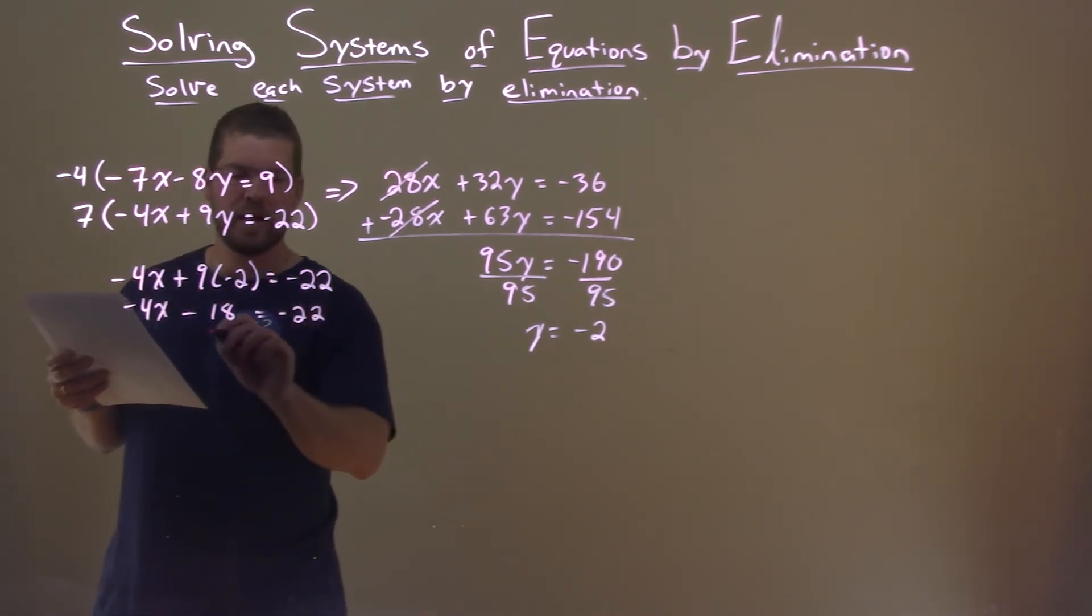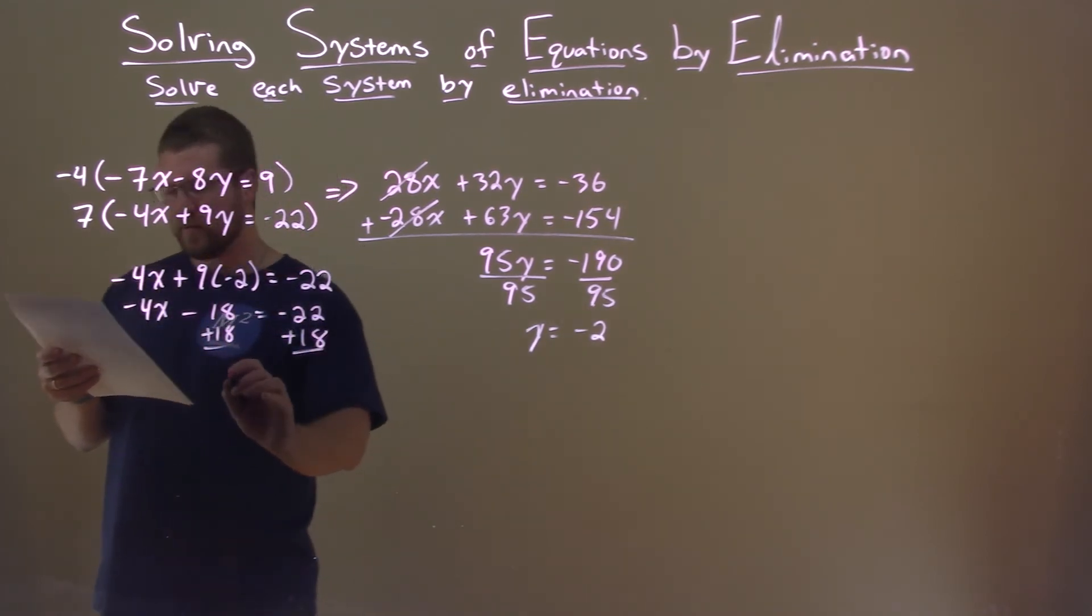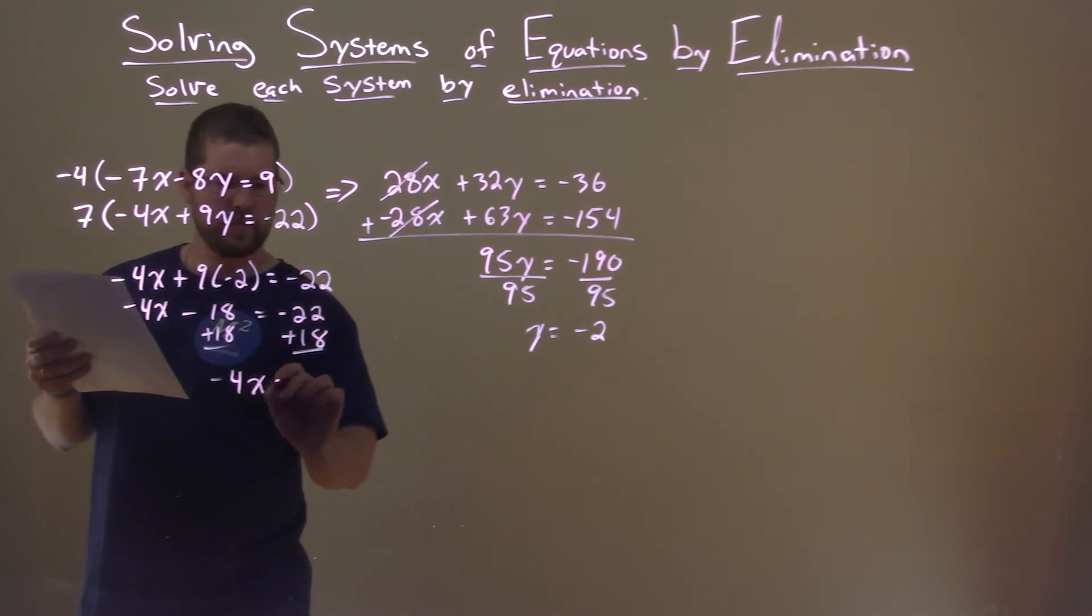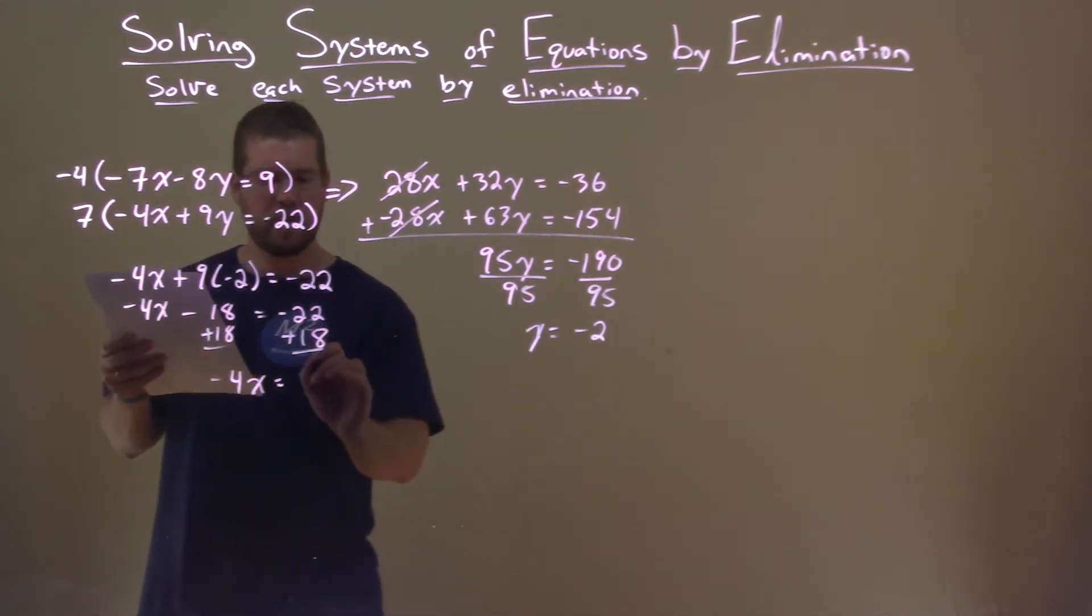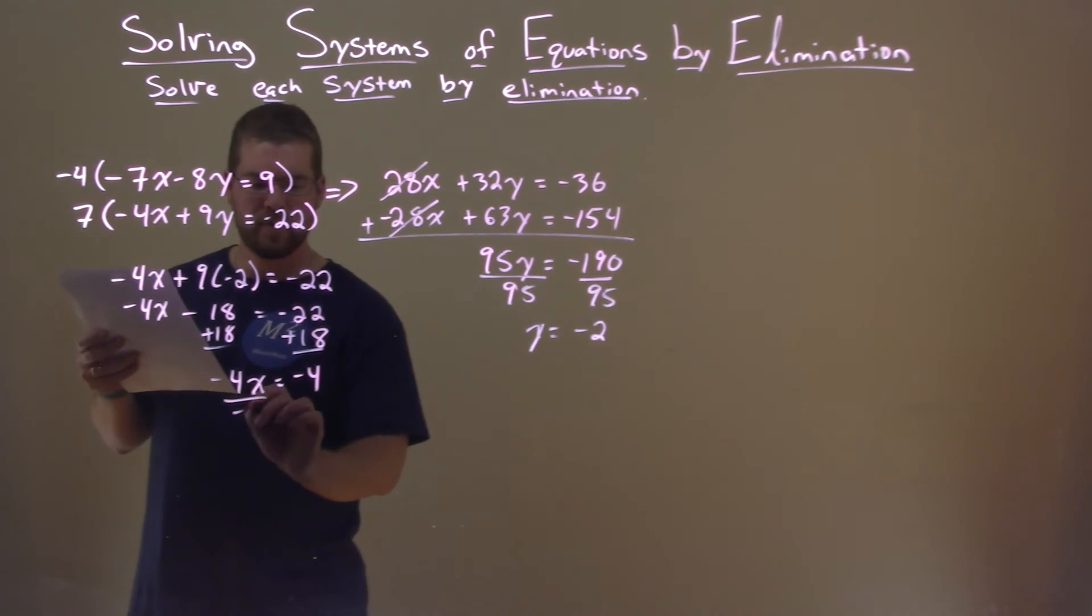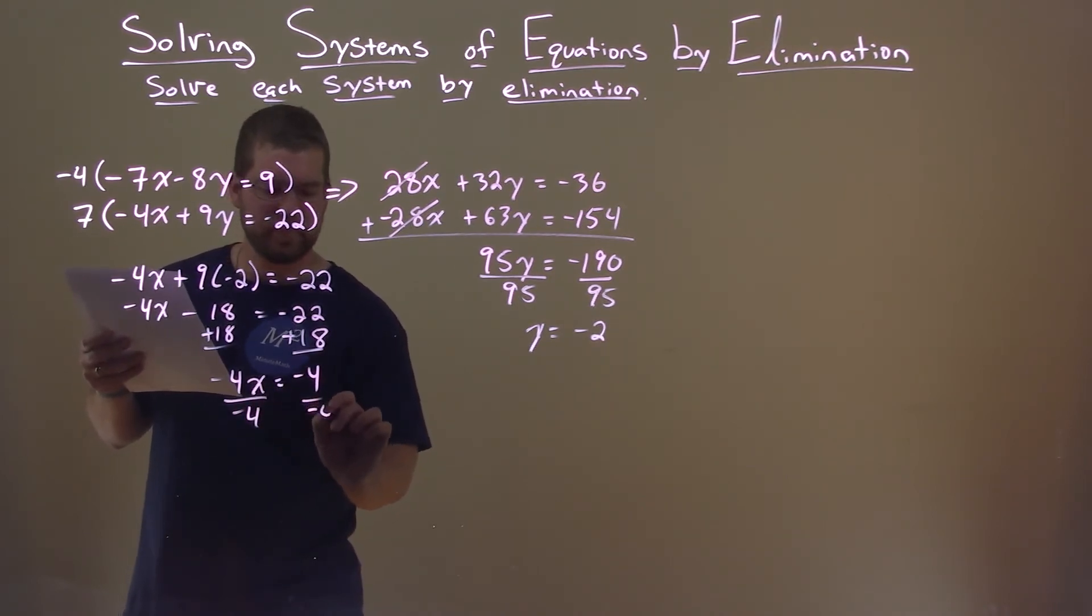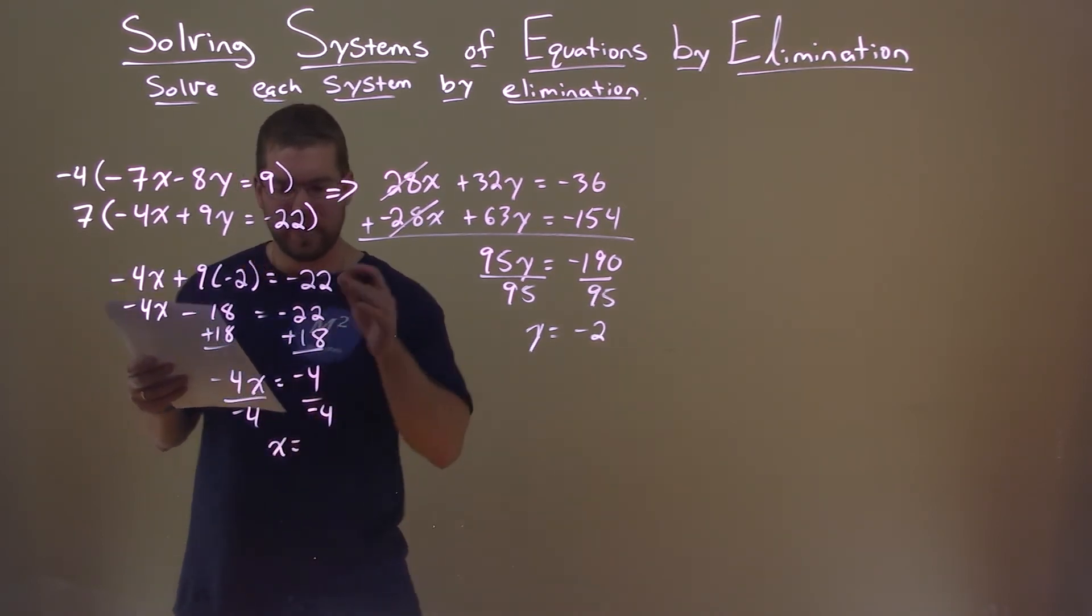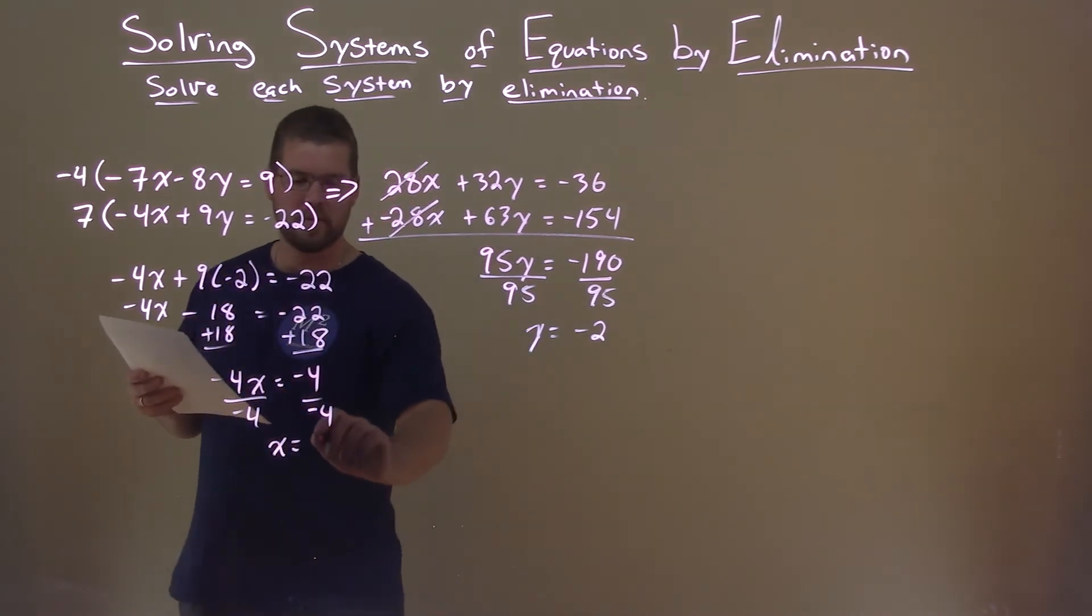Equals negative 22. Adding 18 to both sides. Bring down the minus 4x. And negative 22 plus 18 is negative 4. Divide both sides by negative 4. And we're left with x by itself. Negative 4 divided by negative 4 is positive 1.